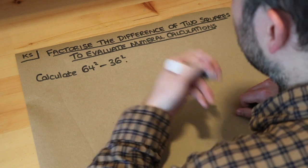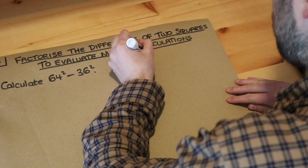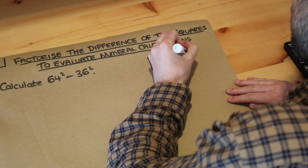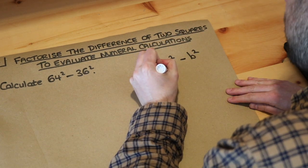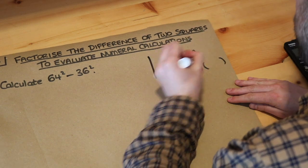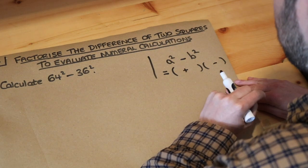In previous videos we looked at the difference of two squares. The difference of two squares is when we have something squared minus something else squared. We saw that we could factorize this into two brackets, one with a plus in the middle, one with a minus in the middle. Doesn't matter which way round.